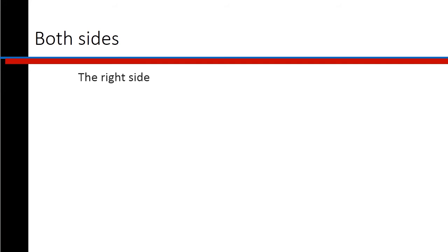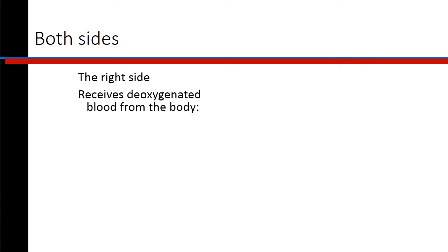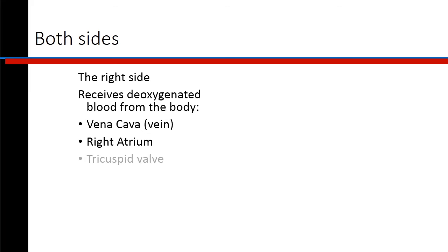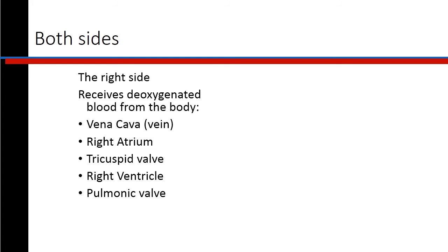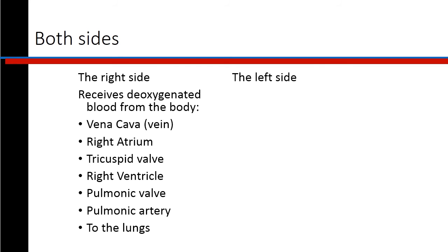An overview of both sides: On the right side, the heart receives deoxygenated blood from the body. It arrives via the vena cava, travels through the right atrium, through the tricuspid valve, and into the right ventricle. It then progresses through the pulmonic valve and into the pulmonary artery where it goes to the lungs to be oxygenated. Once the blood is oxygenated, it will return to the left side of the heart.